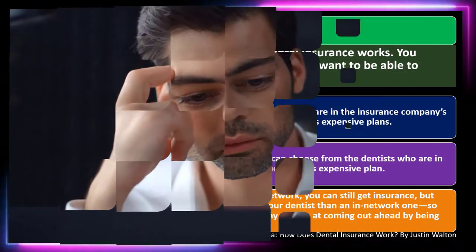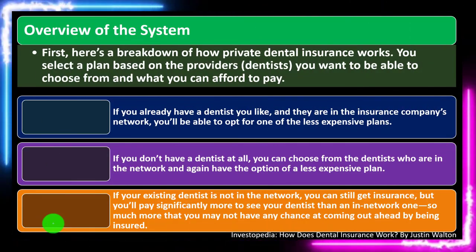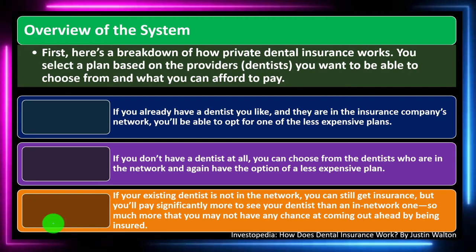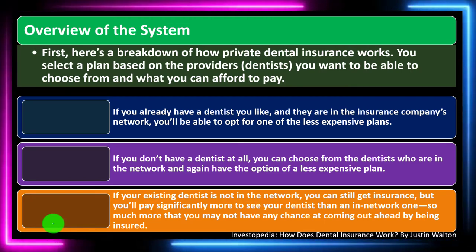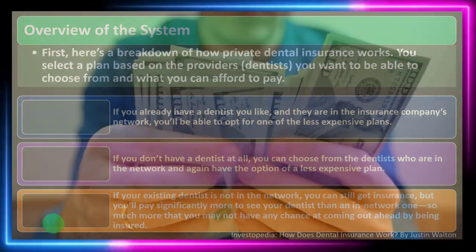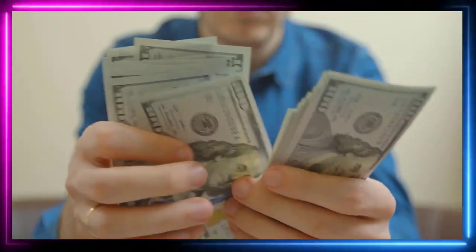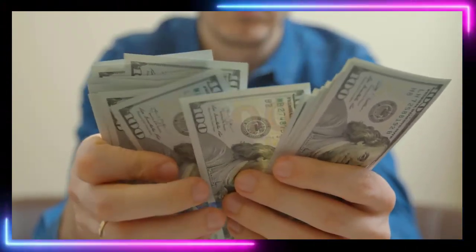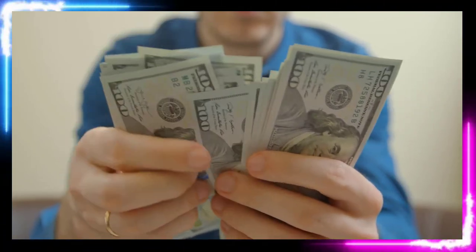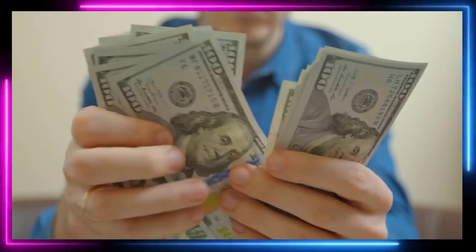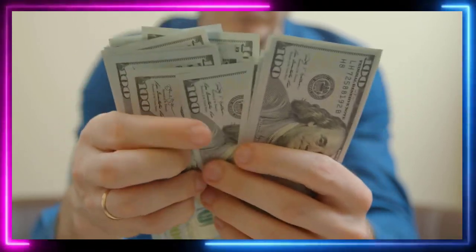When thinking about insurance this way, we're considering it differently than classical insurance like property or life insurance, where we typically purchase coverage to guard against a low-probability but high-cost event — like a home burning down or a sudden death. We hope those don't happen, but if they did, they would be highly costly, and that's what the insurance covers.